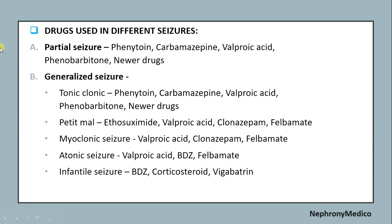Drugs used in different seizures: in case of partial seizures, phenytoin, carbamazepine, valproic acid, and phenobarbital are used. In case of generalized seizures like tonic-clonic, phenytoin, carbamazepine, and valproic acid are used.